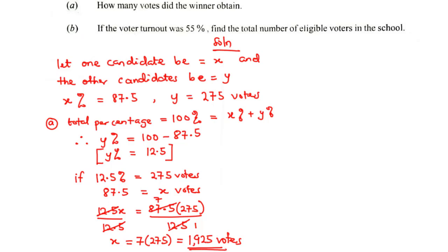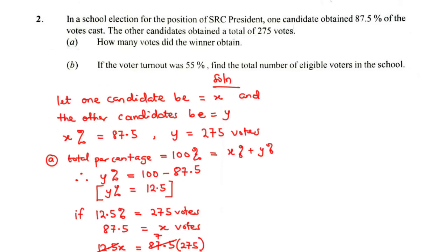Now let's move on to Part B. If the voter turnout was 55%, find the total number of eligible voters in the school. Voter turnout is the percentage of registered or eligible voters who actually voted. So if the voter turnout was 55%, it means that out of 100% of eligible voters, only 55% were able to vote. This 55% corresponds to the total number of people who voted.